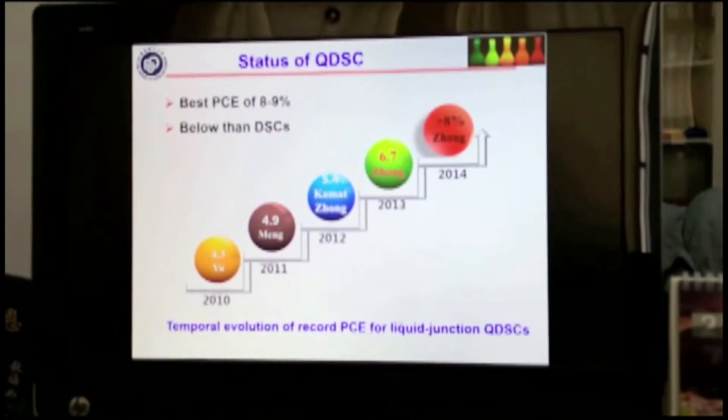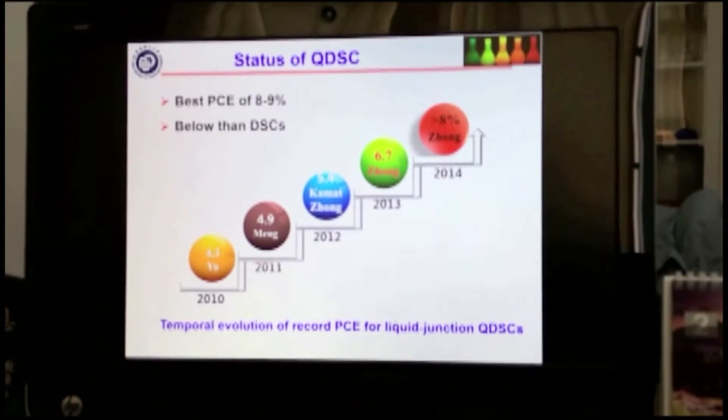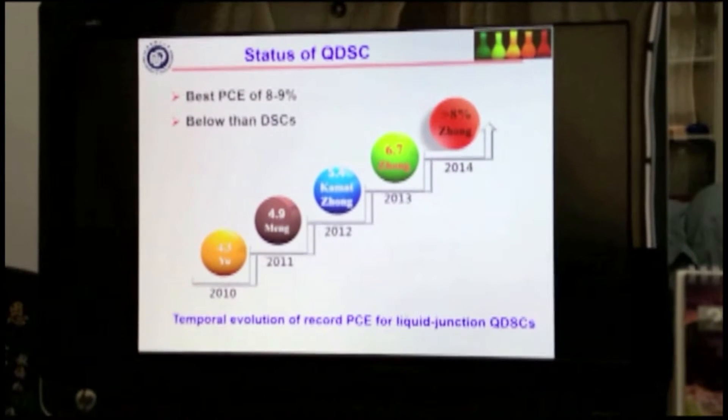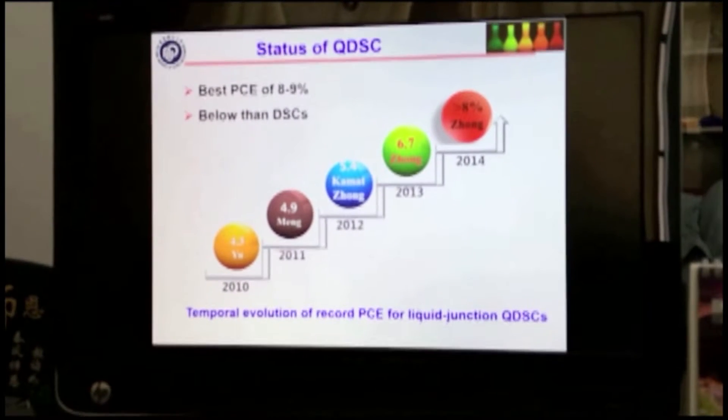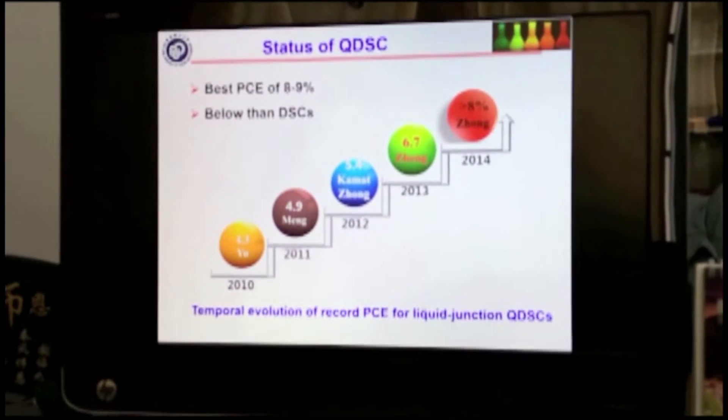However, the potential of quantum dot solar cells has not been fully demonstrated and reported best efficiency only on the level of 8 to 9%. In this video,